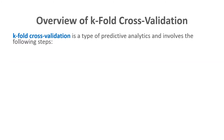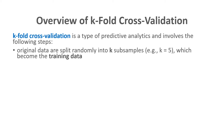K-fold cross-validation is a specific type of predictive analytics model. The original data are first split randomly into k subsamples — for example, k equals five means five subsamples — and these become the training data. This is where the term 'k-fold' comes from: it refers to the number of subsamples, so five subsamples would be called five-fold cross-validation.